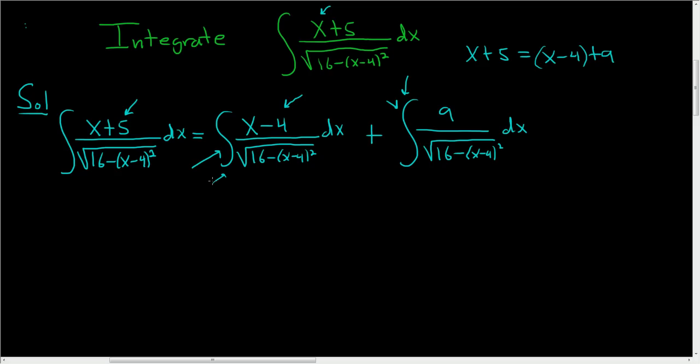Okay, so let's start with the first one. So I'll call it 1, and this will be 2. So for 1, we're going to let u equal 16 minus the quantity x minus 4 squared.